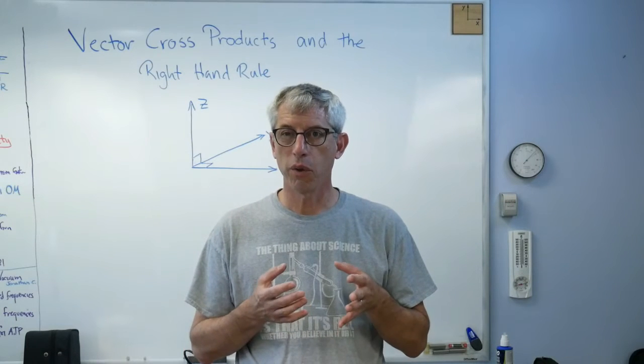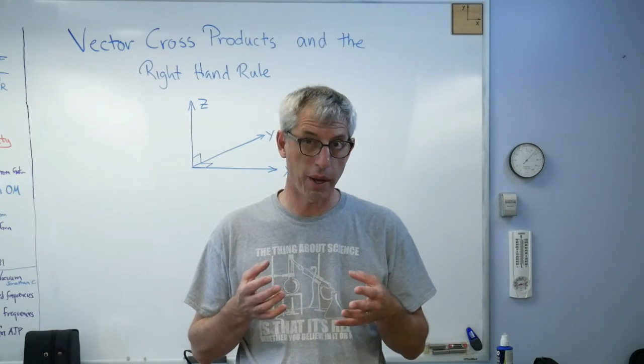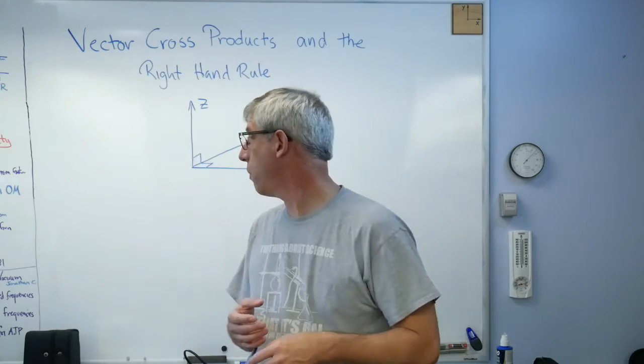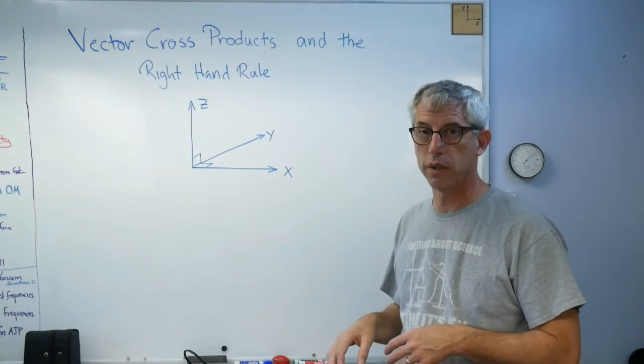Now, you'll see the right-hand rule when you see people lay out coordinate systems for some kind of analysis, and I've got one drawn right here. This is x, y, and z, and this is a right-hand coordinate system.